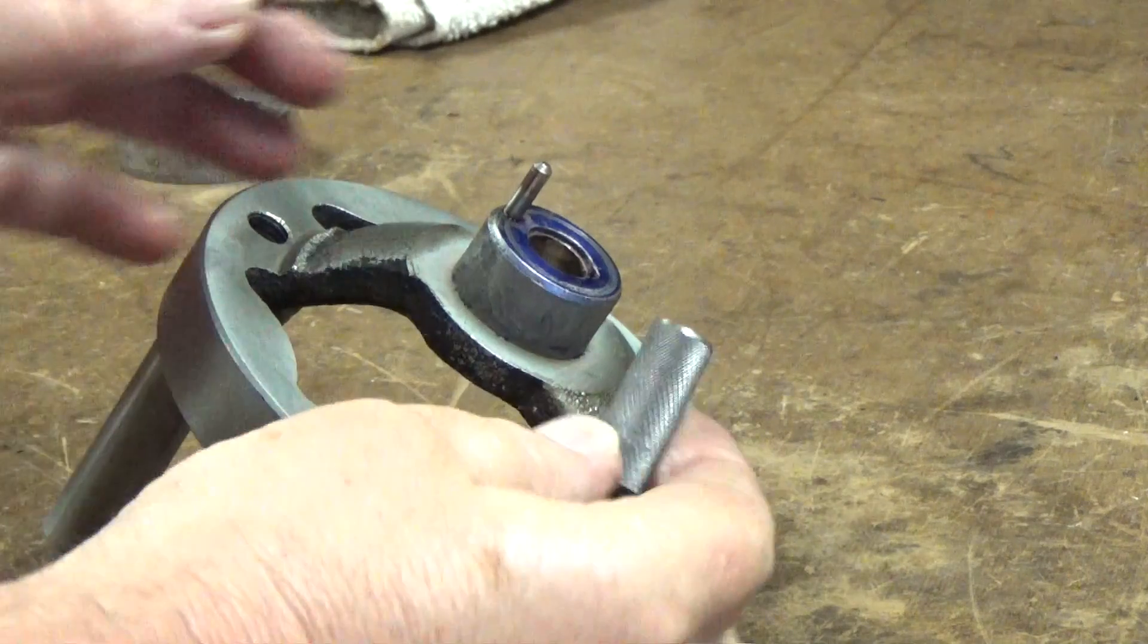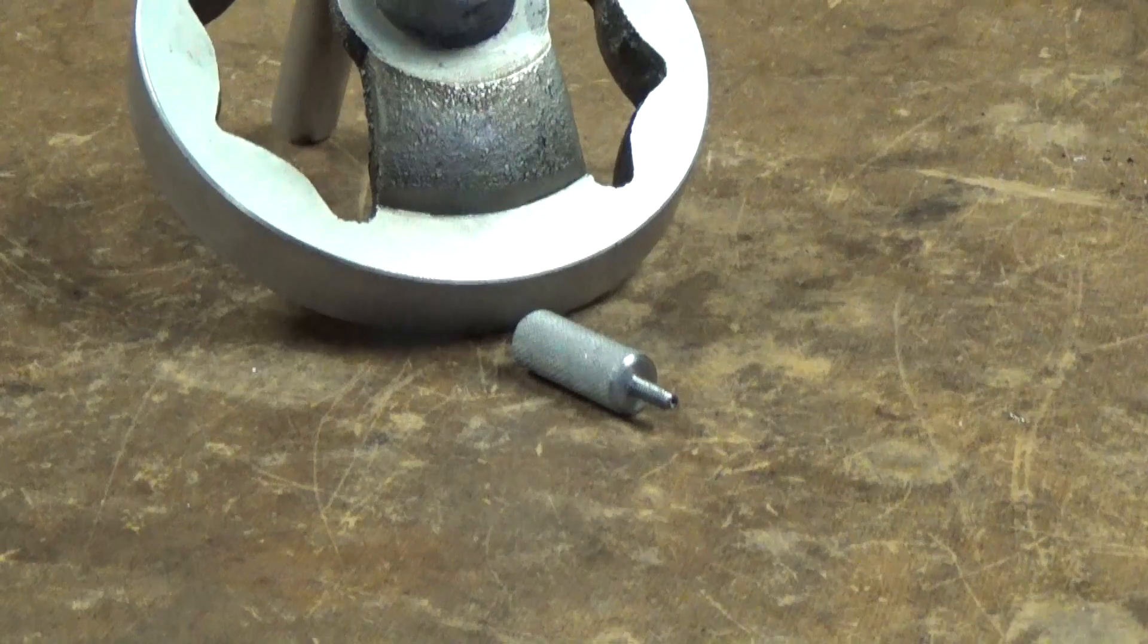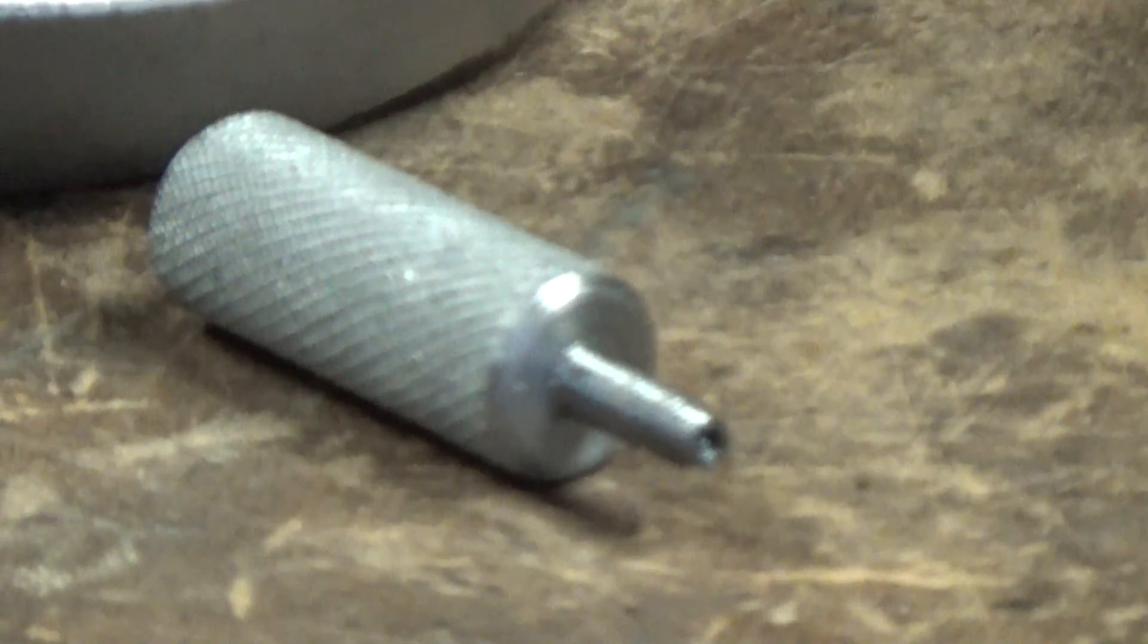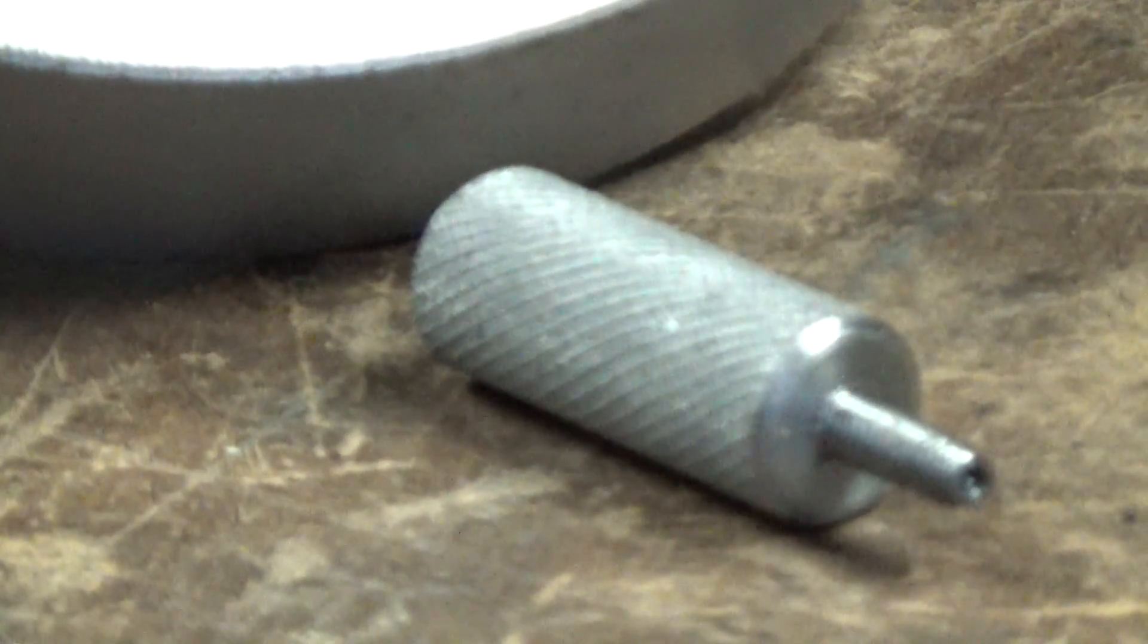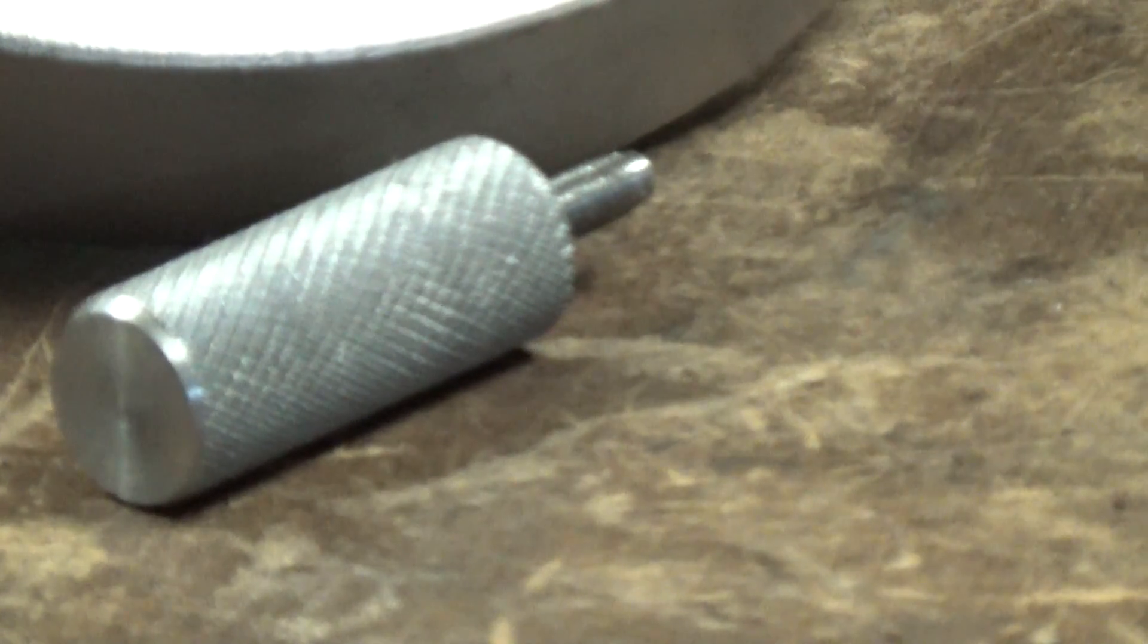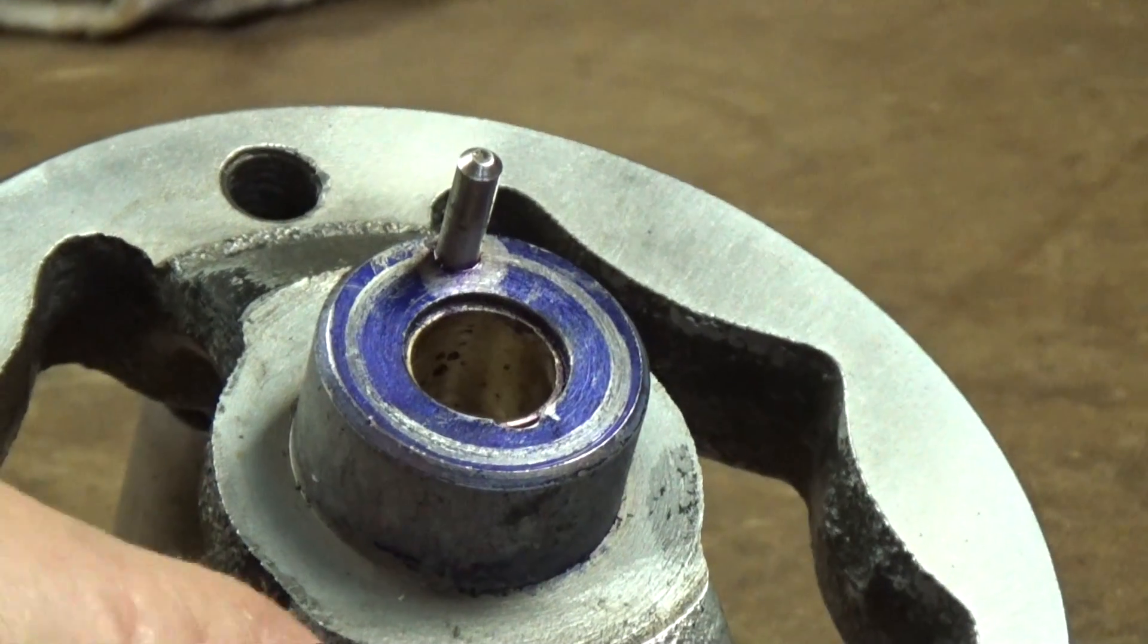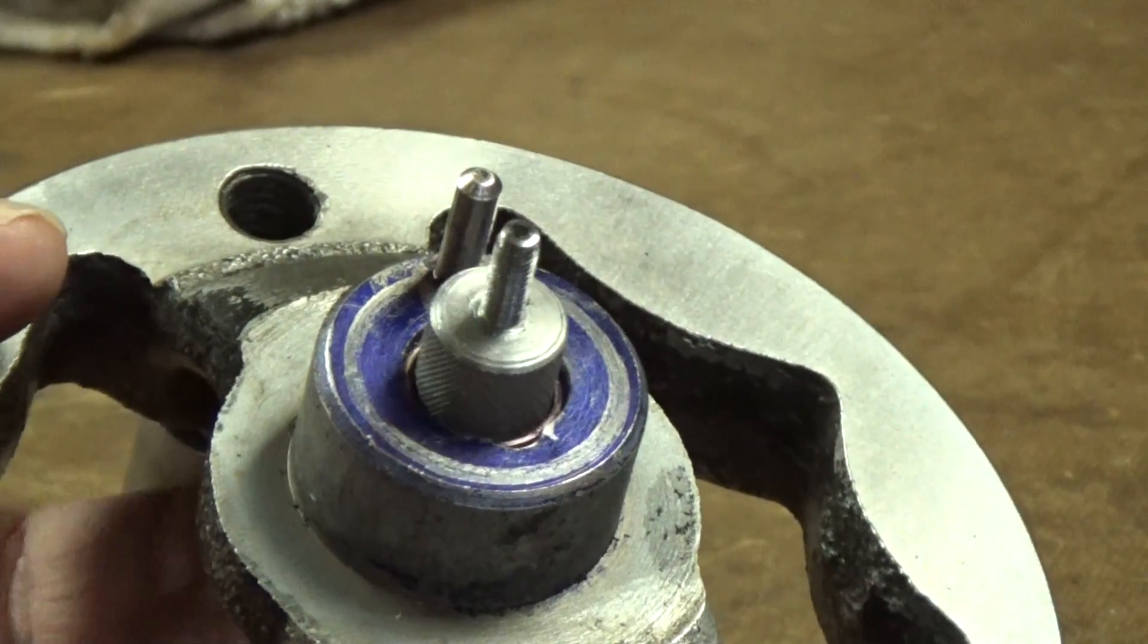All right, so here we have the finished part, knurled and chamfered. Make it to where it will fit to the bore, that way I can take the hand wheel off of there if need be. Now let's go put it on the mill and see how it works.